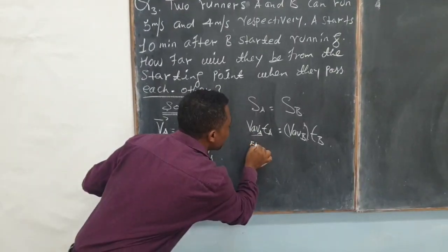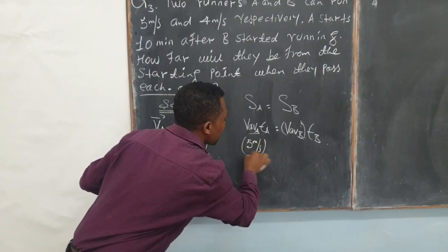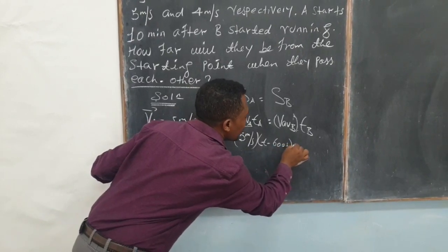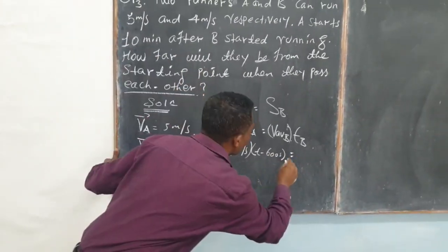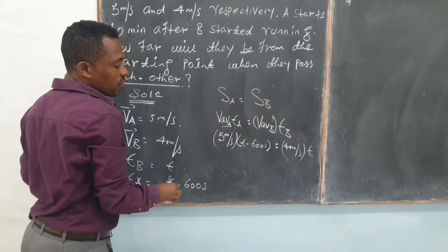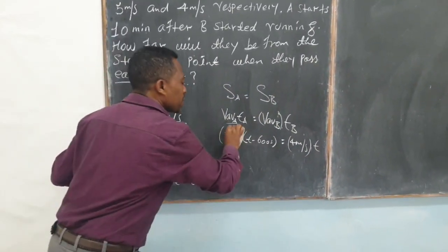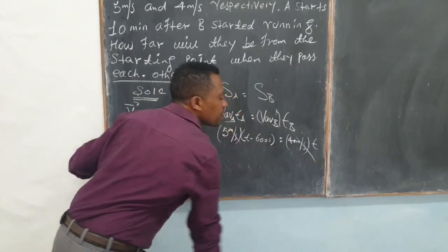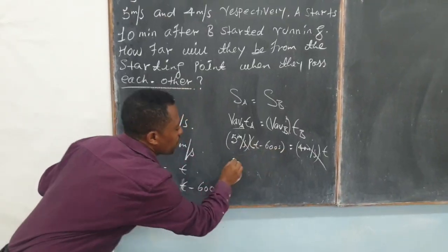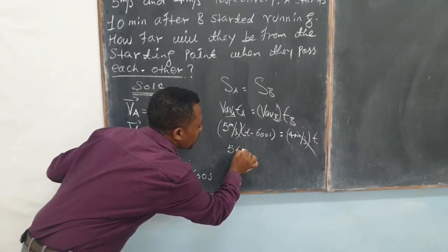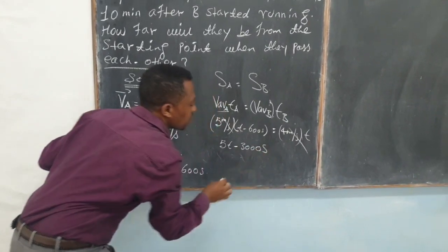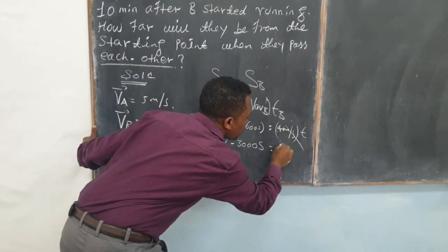So, 5 m per second times T minus 600 seconds, which is equal to 4 m per second times T. Look my dears, 5 m per second times T minus 3000, which is equal to 4T.